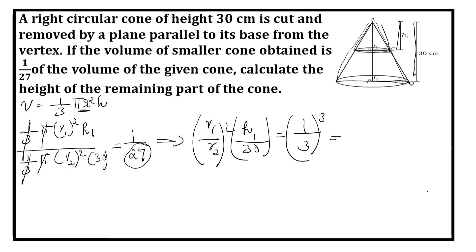Now r1/r2 is equal to h1/30 from equation 1. So I will replace this by (h1/30)² times h1/30 equal to (1/3)³. We can club these two. (h1/30)³ is equal to (1/3)³.